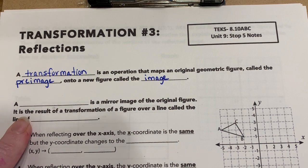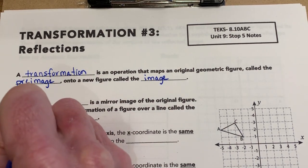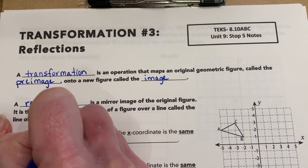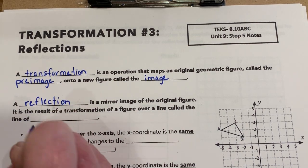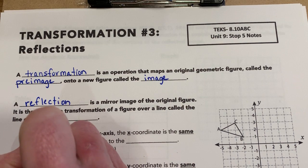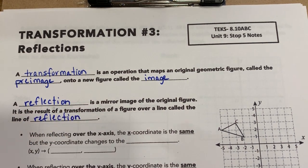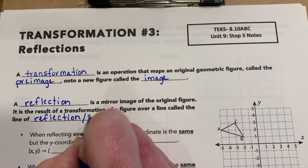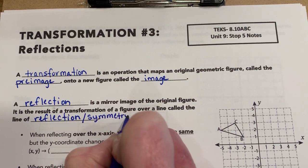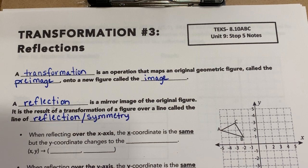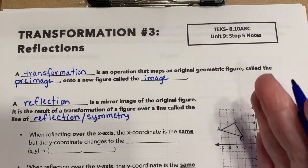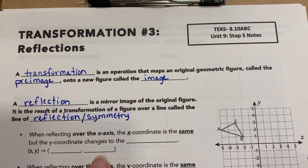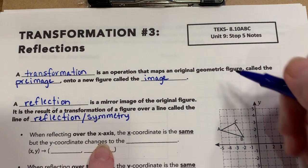Specifically, in this one, we're looking at the reflection. A reflection is a mirror image of the original figure. It's the result of a transformation of a figure over a line called the line of reflection — or you can also call this the line of symmetry. A mirror image or symmetric image is one where, if you look at your image in the mirror, it's actually sort of backwards, and that's what you're doing with a geometric figure.